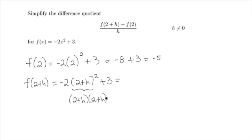So we have to actually FOIL that out. Negative 2 times 2 times 2, so 4, plus 2h plus 2h, so plus 4h. And then the last term multiplied together gives us an h squared. And then adding on our 3.